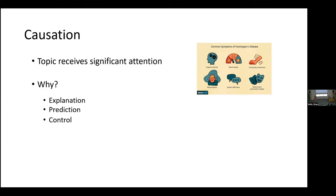A third reason for our interest in causation, and probably the most important one: control. We don't just want to sit back and give accurate explanations and predictions — we want to actually do something about that stuff. We want to change things and make things better. Causes are essential for this because they're factors that give us control over outcomes. In medicine, we don't just want to explain and predict diseases — we want to treat them and prevent them. That involves control.